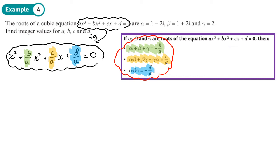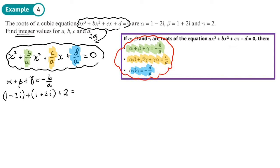Just like the last problem, we need integer values. So let's find b over a first. Alpha plus beta plus gamma equals negative b over a. So that's (1 minus 2i) plus (1 plus 2i) plus 2. Adding those together: 1 plus 1 plus 2 is 4; the imaginary parts cancel out. So 4 equals negative b over a, which means b over a equals negative 4.